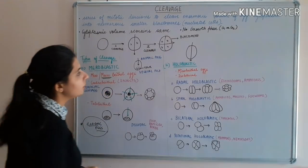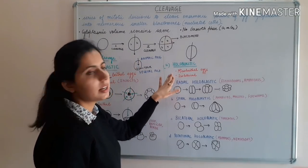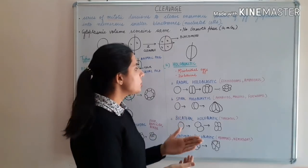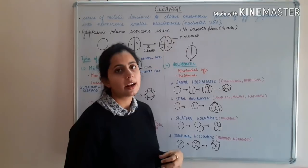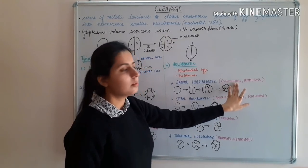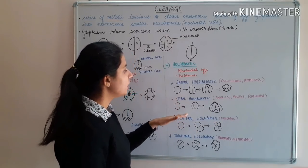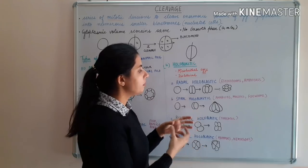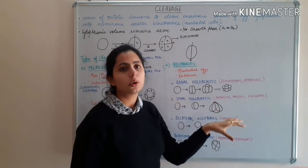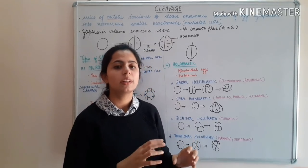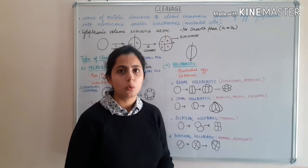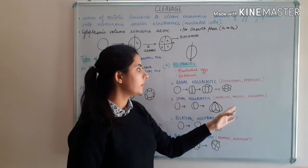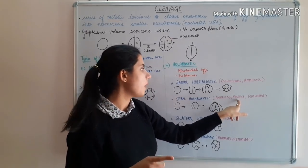Holoblastic cleavage is mainly found in microlecithal and isolecithal eggs. First comes radial cleavage, in which the cleavage pattern is perpendicular — each cleavage is perpendicular to the other, and all blastomeres are equal in size. It is mainly found in echinoderms and Amphioxus. In spiral cleavage, the cleavage pattern is slightly oblique, causing the blastomeres in the lower hemisphere to rotate either clockwise — dextral — or anticlockwise — sinistral. Sinistral spiral cleavage is mainly found in annelids, whereas dextral type is found in molluscs.